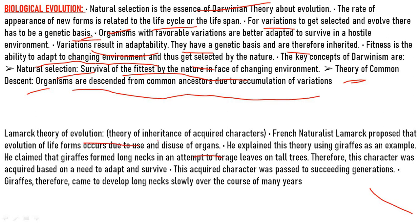Lamarckism, or the theory of inheritance of acquired characters, was proposed by French naturalist Lamarck. It states that evolution of life forms occurred due to use and disuse of organs — organs which were used evolved, while those not used became extinct. He explained this using the giraffe example: the giraffe formed long necks in an attempt to forage leaves, this character was acquired and passed to succeeding generations, and so they came to develop long necks over millions of years.